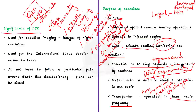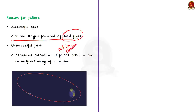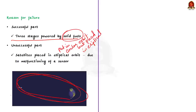The launch vehicle SSLV was composed of three stages powered by solid fuels, and these three performed their function as planned. The problem came when the satellites had to be put in orbit. As per ISRO, there was a malfunctioning of a sensor which resulted in placing the satellites in an elliptical orbit rather than a circular orbit. The shortest height above Earth of this oval orbit was only about 76 kilometers.